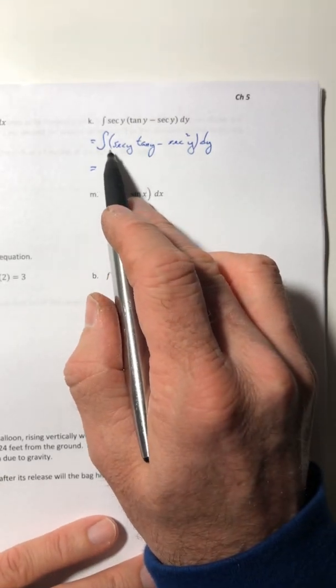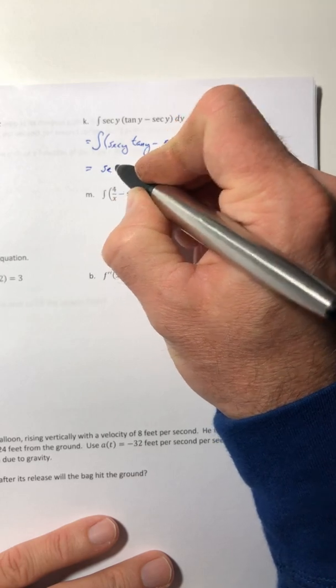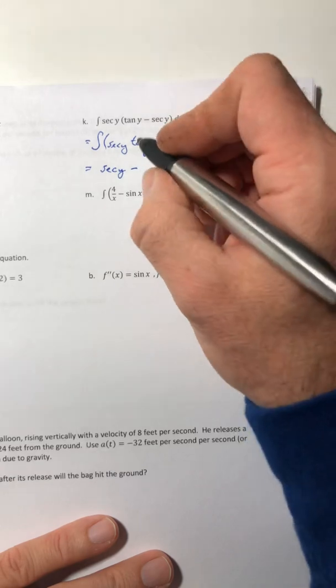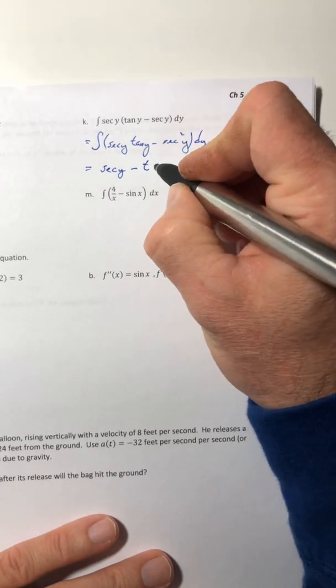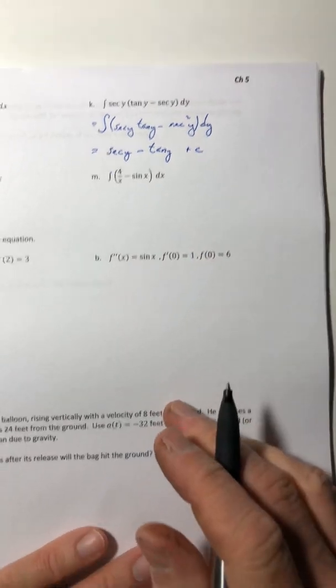And what we've done is now we've created things that we can actually integrate. So the integral of secant tangent is just secant. And then minus the integral of secant squared, which would be tangent.